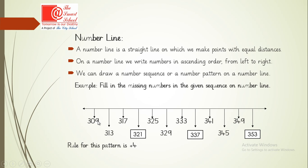Now, how do we draw a pattern or number sequence on a number line? The numbers given are 309, 313, 317 — the rule is plus 4. So 309 plus 4 is 313, plus 4 is 317, plus 4 is 321, plus 4 is 325, plus 4 is 329, plus 4 is 333, plus 4 is 337, plus 4 is 341, 345, 349, and then 353. In this way we can complete a number line for a given number sequence.